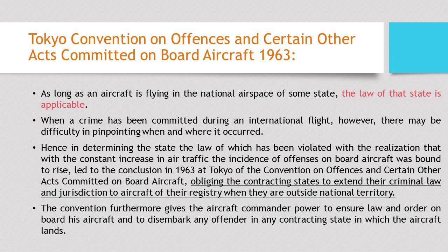Another very important law dealing with aerial navigation is the Tokyo Convention on Offenses and Certain Other Acts Committed on Board Aircraft, which deals with any sort of crime committed during an international flight. This Tokyo Convention obliges the contracting states to extend their criminal law and jurisdiction to the aircraft in which a particular crime has been committed, making clear which criminal law would be applicable under the Tokyo Convention of 1963.